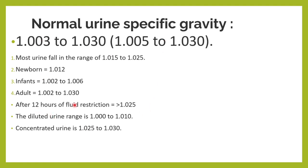Suppose you have had fluid restriction — apne paani bahut kam pia hai — toh you will see that the specific gravity of urine will be increasing. Concentration badh jayega, specific gravity will increase. And the diluted urine will be having a specific gravity down to 1.000.